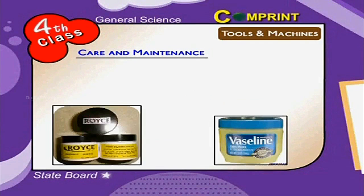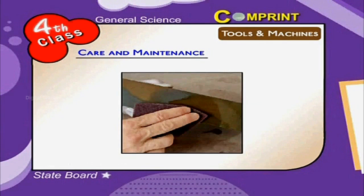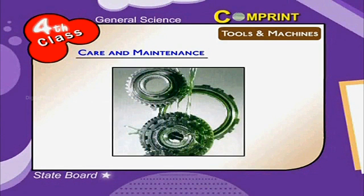Vaseline, grease, and coconut oil are applied to iron tools to prevent rusting. Varnish is applied on wooden tools to protect them from white ants and insects. Lubricants should be used for reducing friction between moving parts of machines.